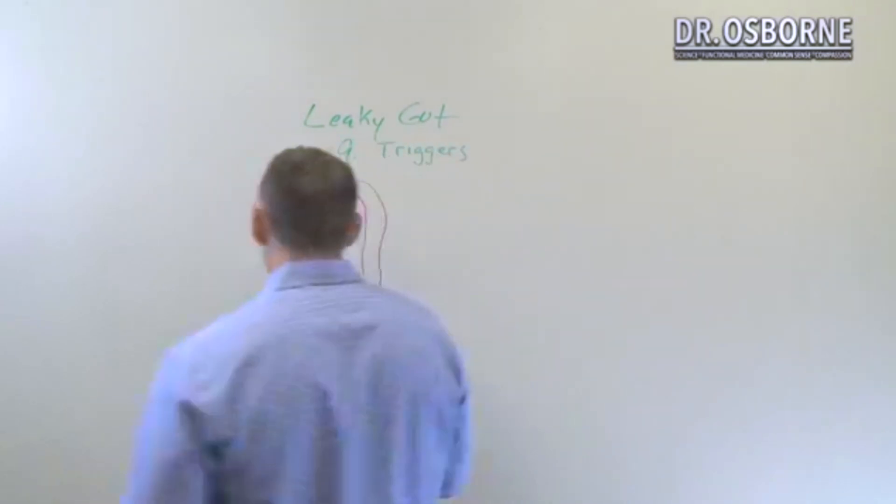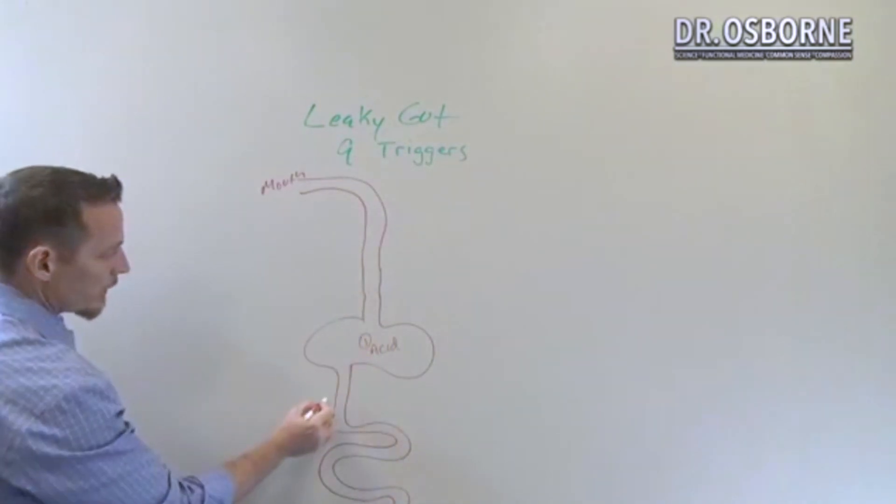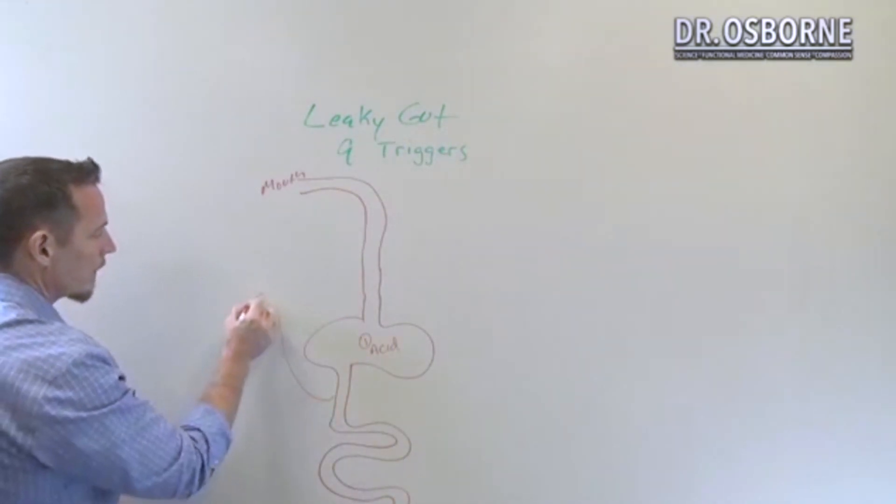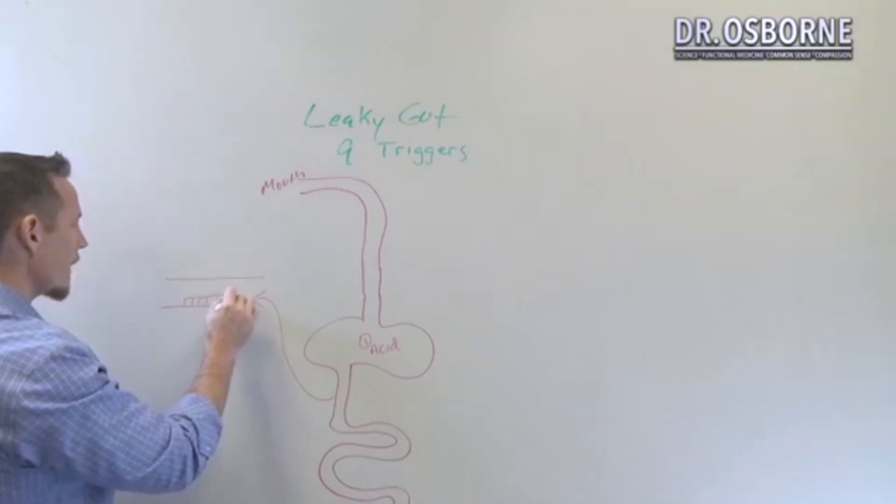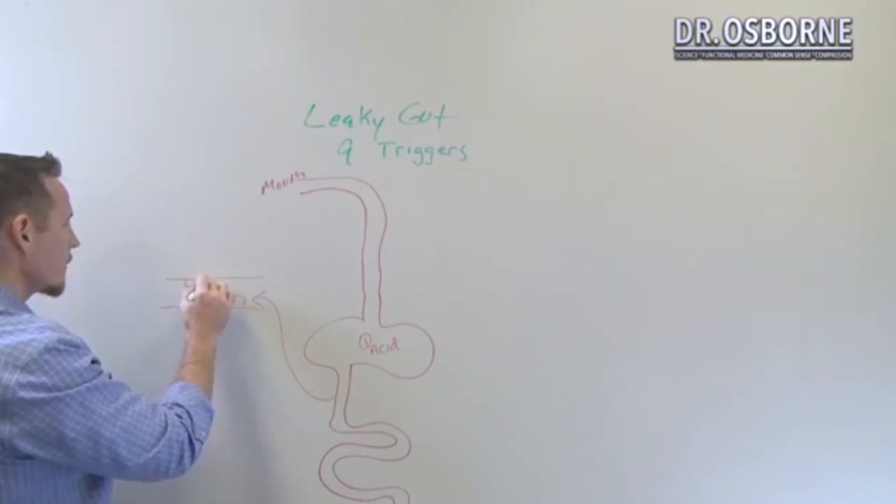But then we also have another barrier. What I'm going to do is draw a close-up or cross-section of GI cells. You've got cells that line the GI tract, and in between these cells you've got little proteins. It's almost like if you've ever owned Lego blocks when you were a kid and you snapped them together - the snaps on the Lego blocks are a lot like the snaps between the cells in your gut lining.